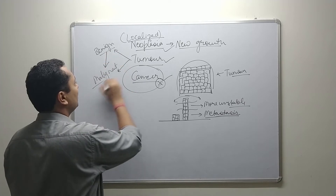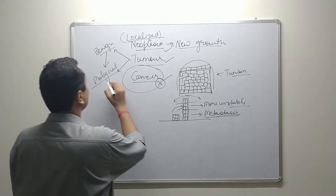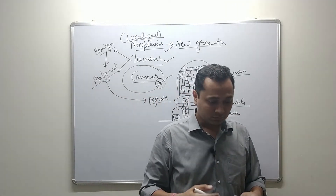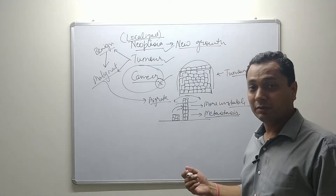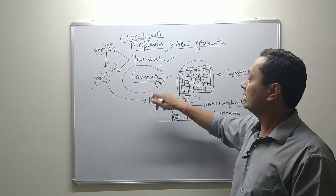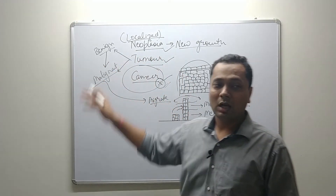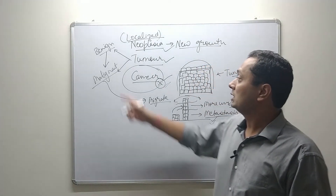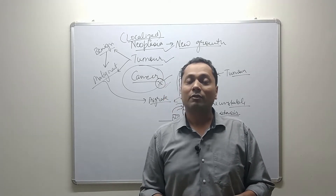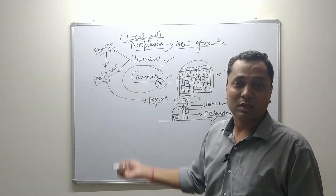Benign tumors over a period of time can become malignant — they convert from the benign stage to the malignant stage. Malignant tumors have the ability to migrate to other parts of the body; they undergo metastasis. To summarize again: benign tumors are localized, while malignant tumors — a part of the tumor can break off and travel to some other part of the body. These malignant tumors are called cancerous tumors.